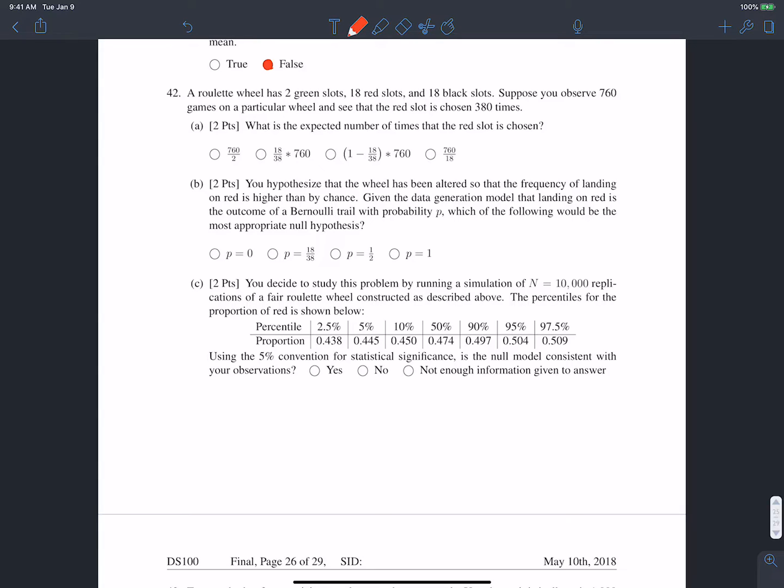OK, 42, a roulette wheel has two green slots, 18 red slots, and eight black slots. Suppose you observe 760 games and you see that the red is chosen 380 times. A, what's the expected number of times that the red slot is chosen?